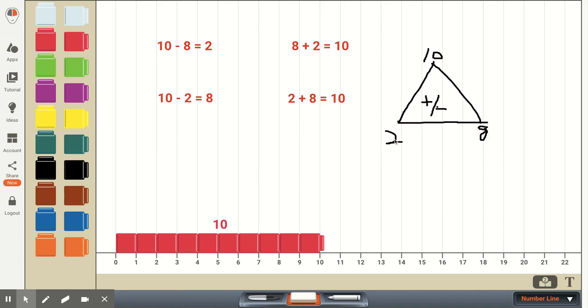Or if they start with 10 and they subtract 8, they're going to get 2. And for addition, if they add 2 plus 8 equals 10, or using the commutative property 8 plus 2 would be equal to 10.